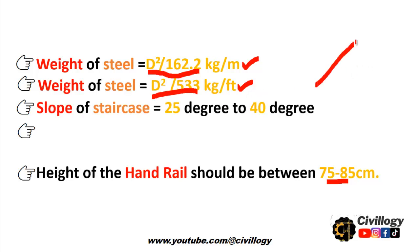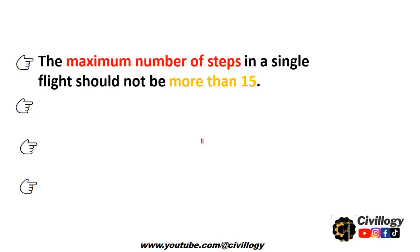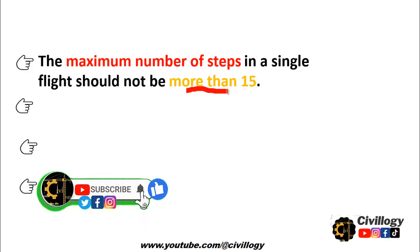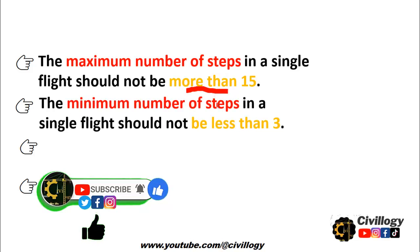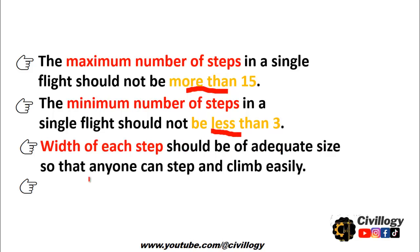The slope of the staircase - this is the angle the waist slab makes with the horizontal - should be between 25 degrees to 40 degrees. It should not be steeper, nor should it be less than 25 degrees. Similarly, the height of headroom in any case should not be less than 2.5 meters. The maximum number of steps in a single flight should not be more than 15. Ensure at the site that the flight has a maximum of 15 steps. The minimum number of steps in a flight should not be less than three.